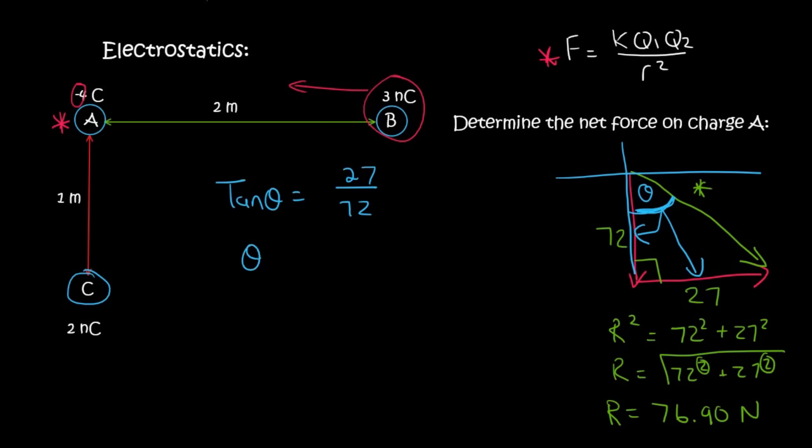So we can say tan theta is equal to the opposite over the adjacent. And then to find theta itself, you would have to say shift and then tan and then 27 over 72. Shift, I mean on the Casio calculators. And so you're going to say shift tan 27 over 72.